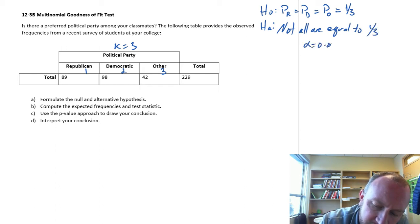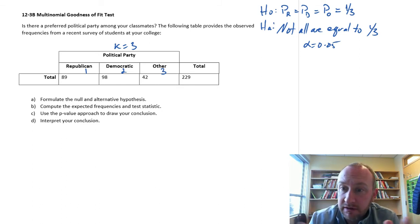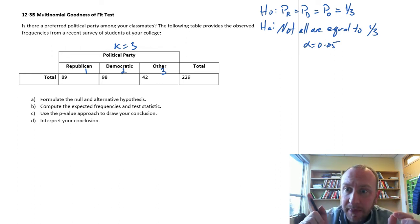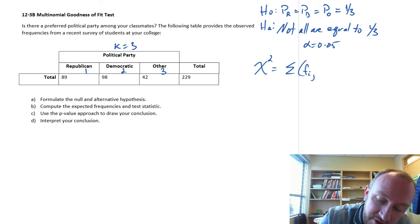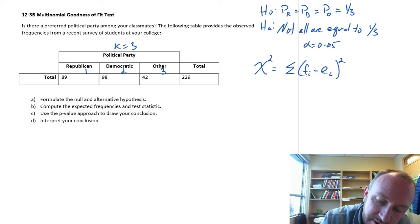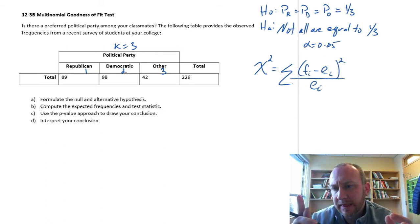We can do this test at whatever level of significance we like. The rest of this is going to look very similar to the other exercises we've done. Our test statistic is still an upper-tail chi-squared test. We have our observed values, and we need to obtain our expected values. Those differences are then squared. It's a similar calculation, but the expected values here are a lot simpler to calculate.